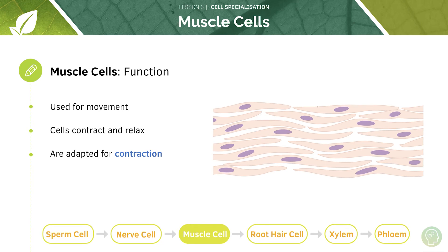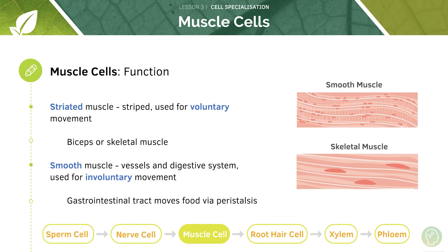Now let's take a look at muscle cells. Muscle cells are used for movement — they contract and they relax, allowing different types of movement. There are three types of muscle fibres, but we're going to take a look at striated and smooth muscle.